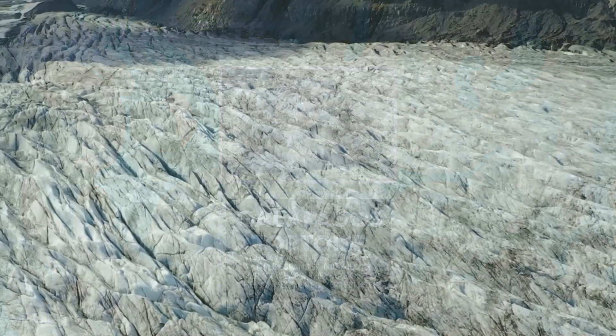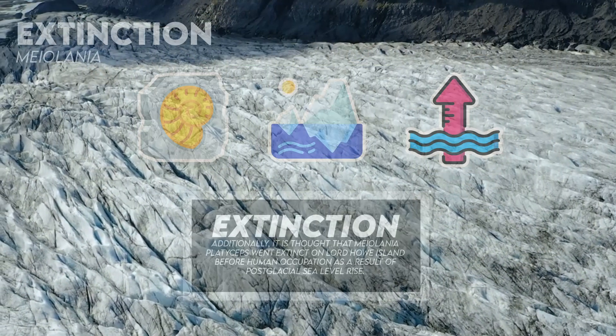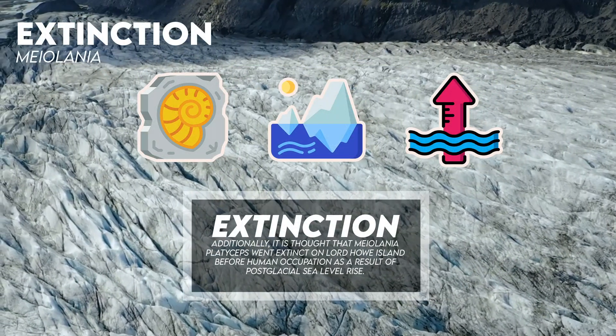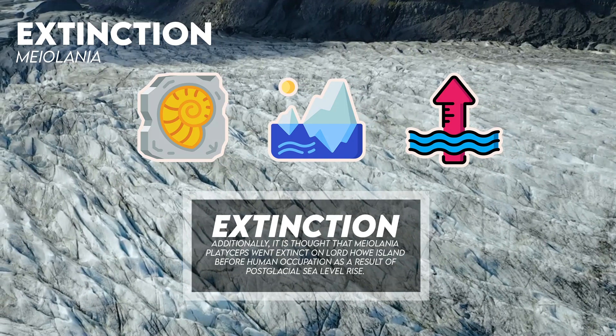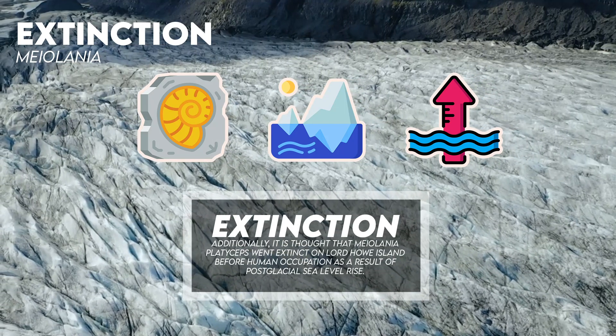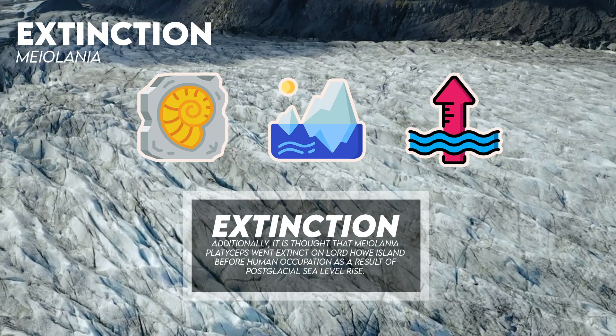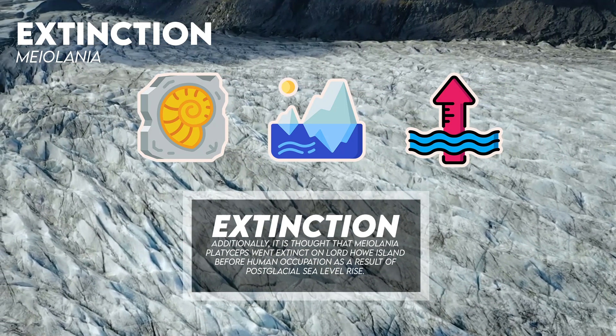Additionally, it is thought that Myolania platyceps went extinct on Lord Howe Island before human occupation as a result of post-glacial sea level rise.